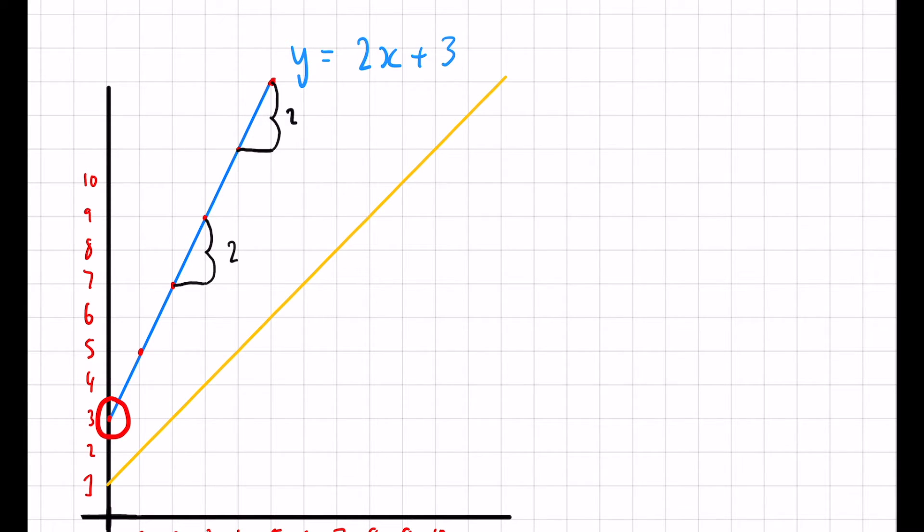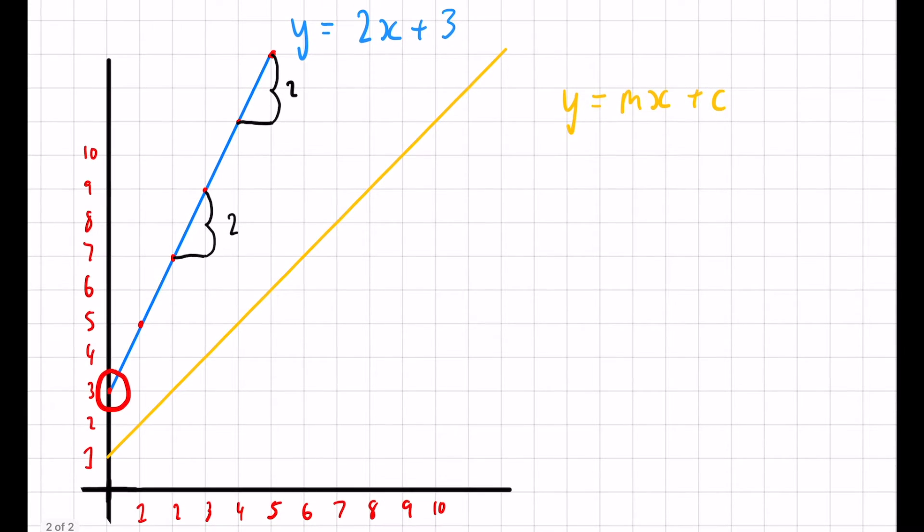Next, we're going to look at the second line. Again, write out your y equals mx plus c—always a good starting point. We can identify where this line crosses the y-axis. We can see it's at 1 there, so we're going to have y equals mx plus 1.